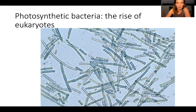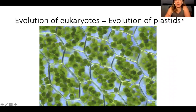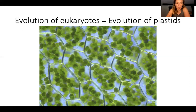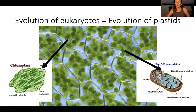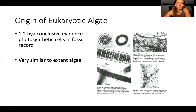It's not the only photosynthetic bacteria, but it's an important one. How did this relate to the evolution of eukaryotes? Well, the evolution of eukaryotes is entirely because of the evolution of plastids. We're going to spend a lot of time talking about this over the next few lectures. This is a picture of some plant tissue full of chloroplasts. The evolution of eukaryotes depended on the evolution of plastids and chloroplasts — important for photosynthesis — but also the evolution of the mitochondria, which was absolutely essential for all eukaryotes.